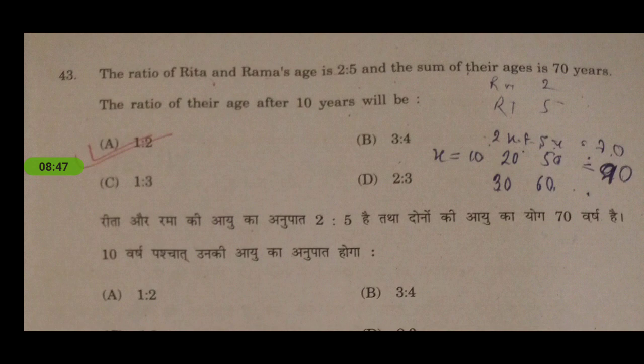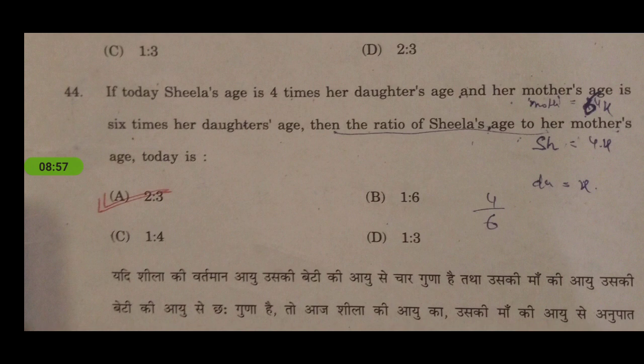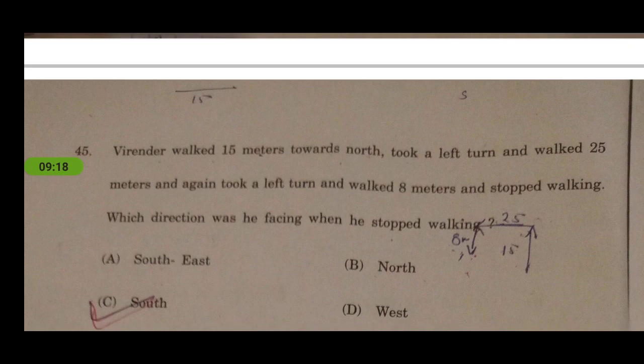Based on ratio: the ratio of Rita and Rama's ages is 2:5 and the sum of their ages is 70 years — find the ratio of their ages after 10 years. Simple mathematics. Another: if today Sheila's age is four times her daughter's age and her mother's age is six times her daughter's age, the ratio of Sheila's age to her mother's age is 2:3. In the online exams, reasoning questions are harder than in this older offline paper.